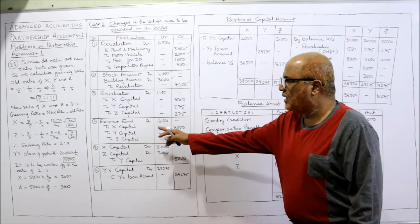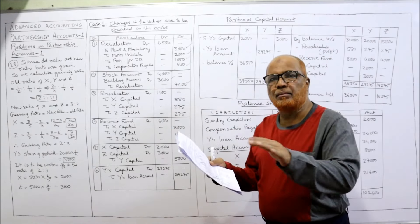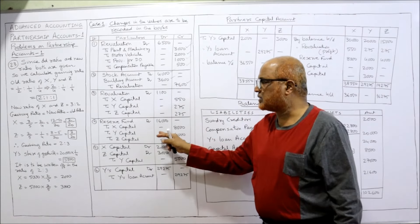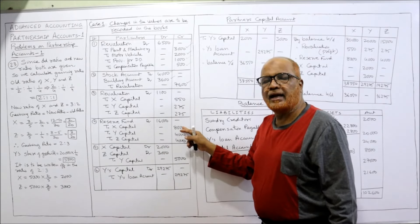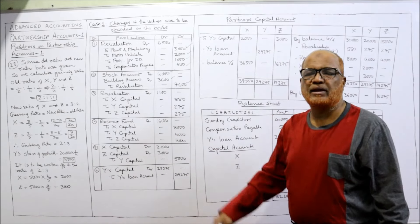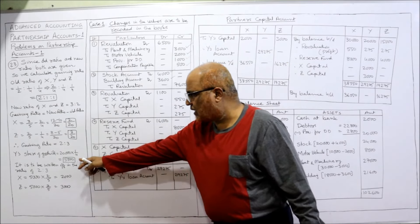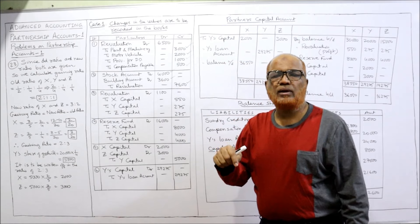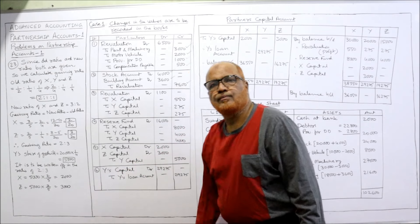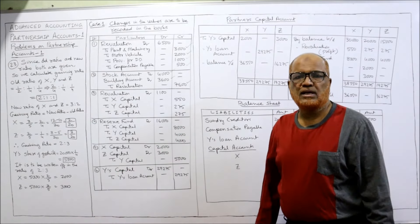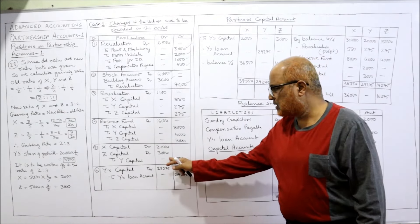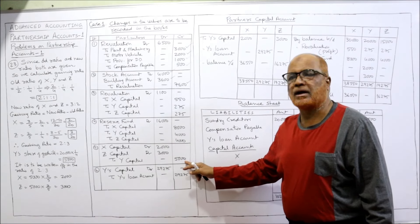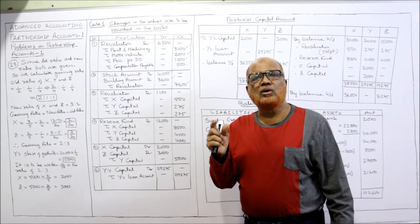Reserve fund: at the time of retirement, reserve fund amount 16,000 is distributed in old ratio 2:1:1. Entry: reserve fund account debit to X capital 8,000, Y capital 4,000, Z capital 4,000. Goodwill: Y's capital account is credited by 5,000, and continuing partners X and Z are debited. Entry: X capital account debit 2,000, Z capital account debit 3,000, to Y's capital 5,000 — being goodwill adjusted in partners' capital accounts.